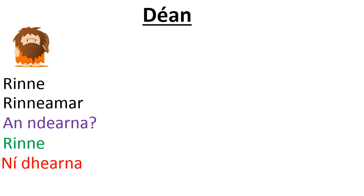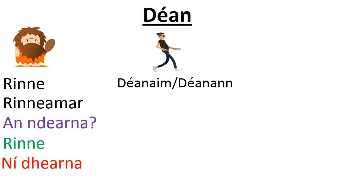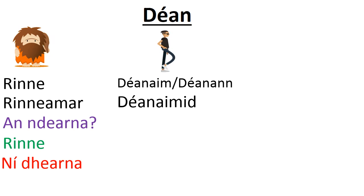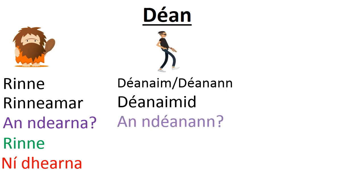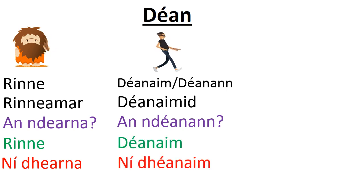The good news is the rest of the verb is pretty straightforward. In the aimsir láithreach: 'déanann' for mé, tú, sé, sí, etc. — just like the regular ones. 'Déanaimid' for we. The question uses 'an' and 'a dhéanann'. 'Déanann' — yes, I do make. 'Ní dhéanann' — no, I don't make. All the rules in the aimsir láithreach look just like they would for a regular verb.